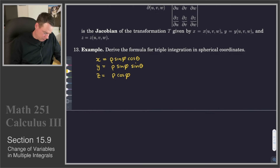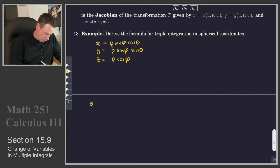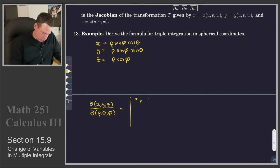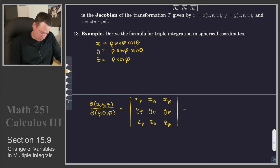Then we set up the Jacobian. The Jacobian is d(x,y,z) over d(rho, theta, phi). Our entries are going to be the derivative of x with respect to rho, the derivative of x with respect to theta, the derivative of x with respect to phi, and similarly for y and z. So we've got nine derivatives to compute and then a determinant to work out after that.